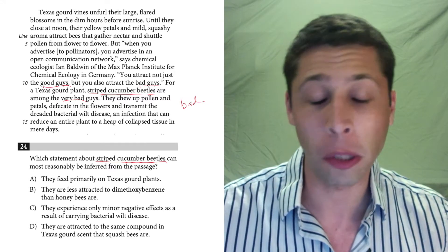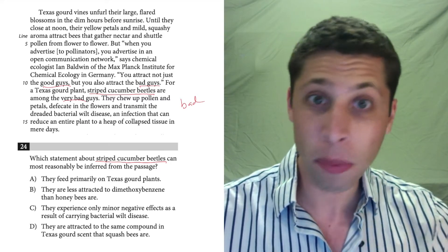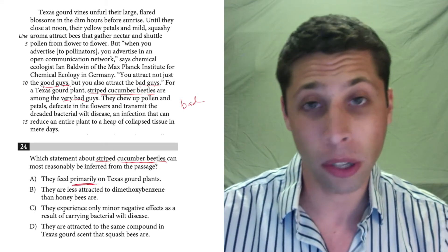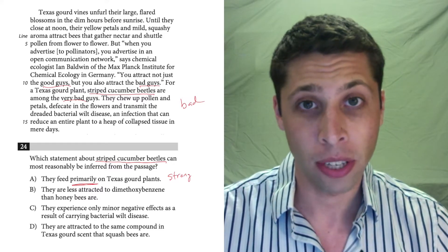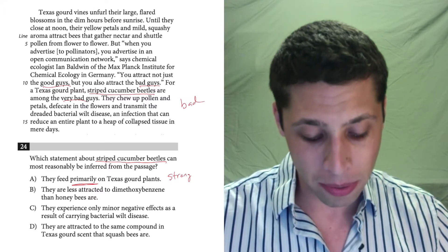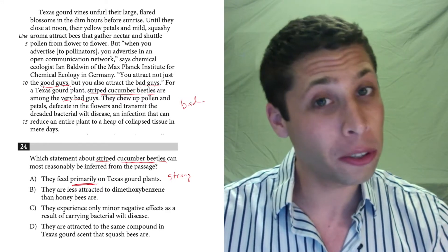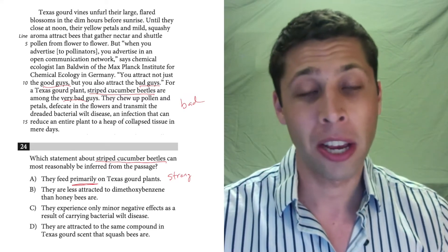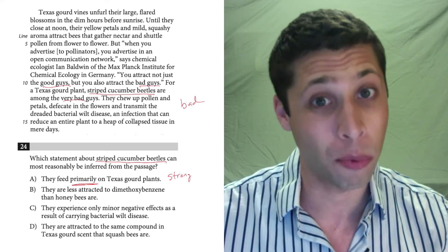And hopefully we can look at the choices and learn a little bit more about what our task is here. They feed primarily on Texas gourd plants. Well, they seem to be involved with these Texas gourd plants, but the word primarily is one of those really strong words that I know is a problem on SAT questions. You have to be really skeptical of this word primarily. Do the beetles feed on the gourd plants? Probably. Do they primarily feed on the gourd plants? I really don't have evidence of that. So that's not a good sign.